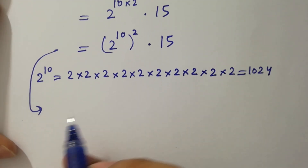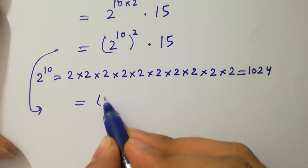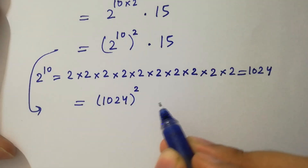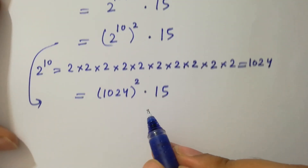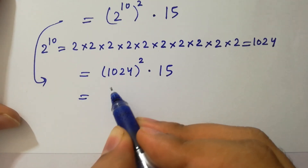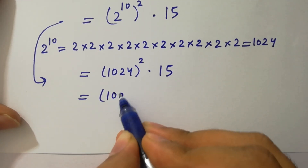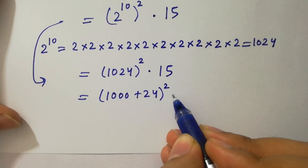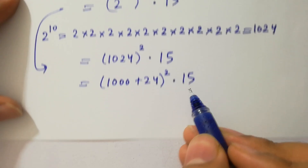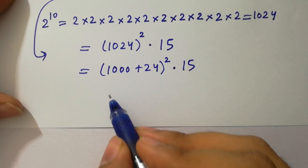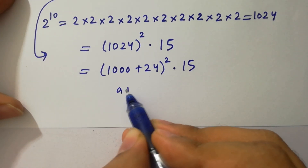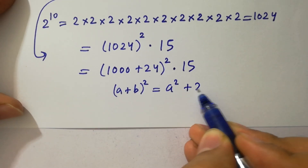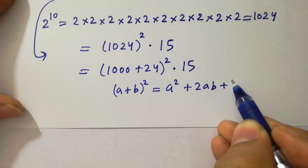That gives us 1024^2 times 15. We write 1024 as 1000 plus 24, so we have (1000 + 24)^2 times 15. Using the formula (a + b)^2 equals a^2 plus 2ab plus b^2.